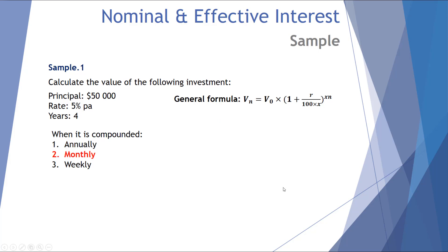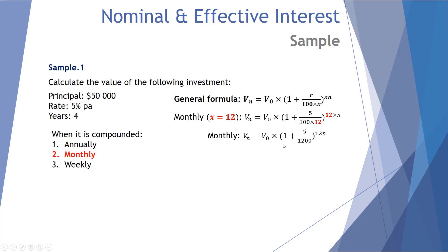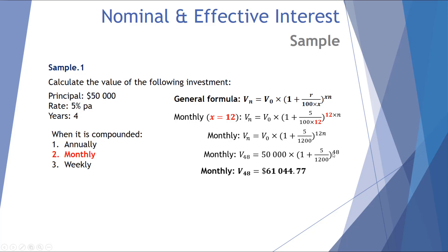Let's see what happens when we go monthly. The equation starts the same, but now we substitute x = 12, because there are 12 months in a year. Our growth factor becomes (1 + 5/1200)^(12n). Investing for four years means 48 months, so we calculate the value at 48 months. That returns a value of $61,044.77, slightly higher than the annual strategy.